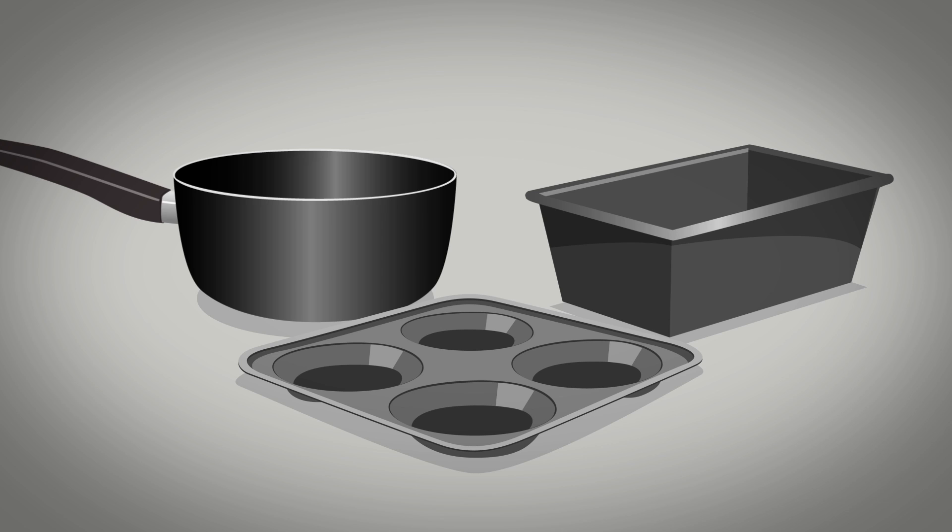Cooking pans and baking tins are usually made from metal, typically iron, steel, stainless steel, copper or aluminium.